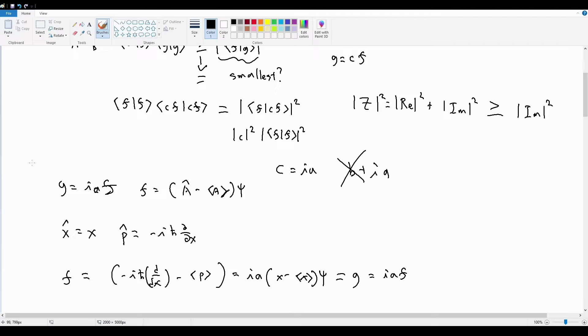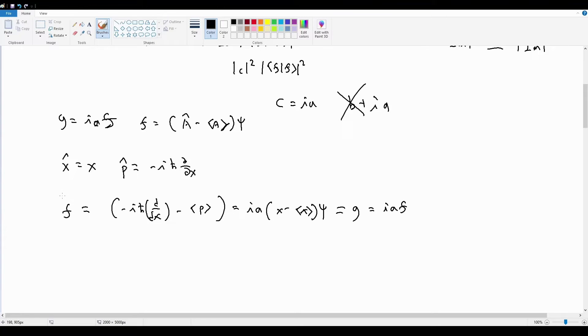So this turns out to be a differential equation for psi. And its general solution, as we will see in problem 3.17, is going to be, so per problem 3.17, which I will do in a later video, but for now, let's just take our word for it. The solution for psi, when I look at this differential equation, it turns out that it's going to equal a times e to the negative a times x minus the expectation value of x squared divided by 2h bar times the exponential of i expectation value of p times x divided by h bar. So this is a Gaussian, once again.